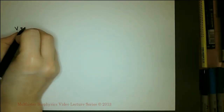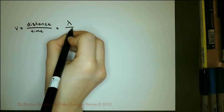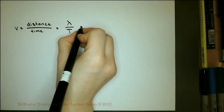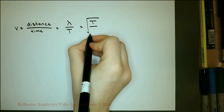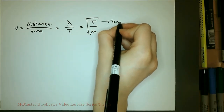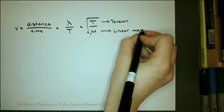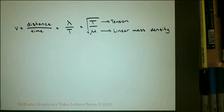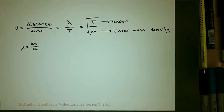The wave velocity is equal to distance over time, or the wavelength over the period. The wave velocity is determined only by the properties of the medium. For a string, the wave velocity is equal to the square root of the tension over the linear mass density. The linear mass density is the mass per meter. If tension is increased, velocity increases. If the medium is lighter, velocity increases.